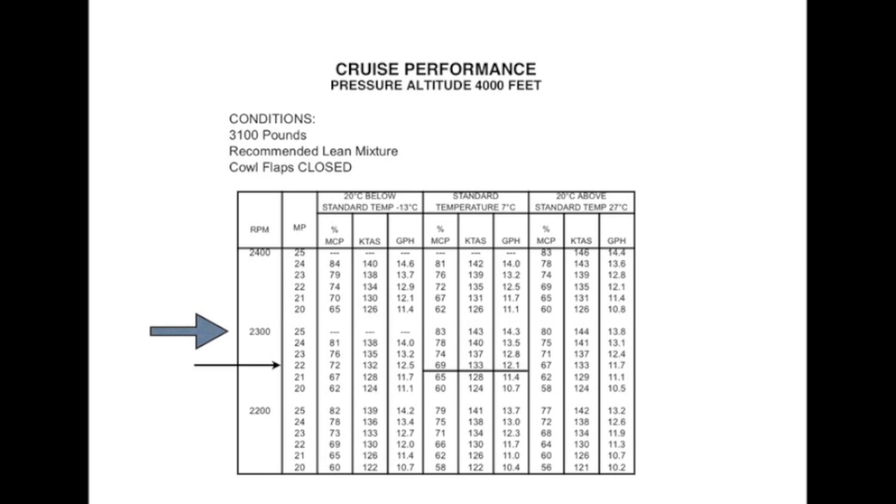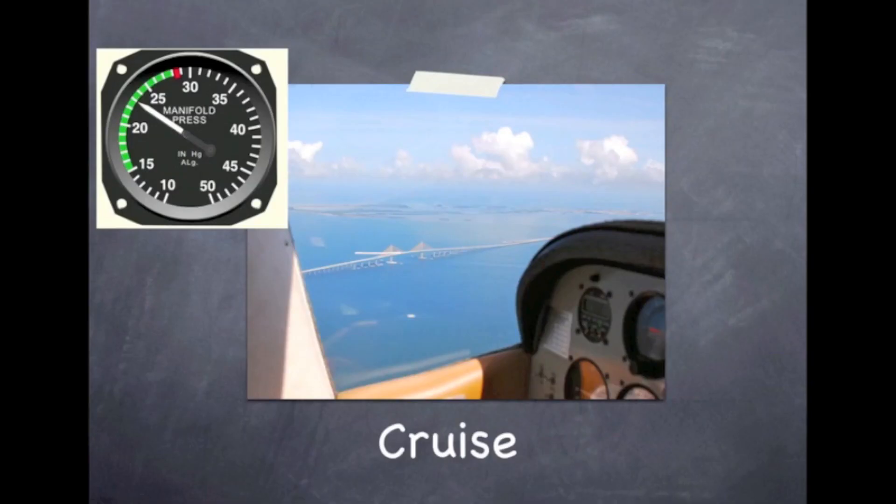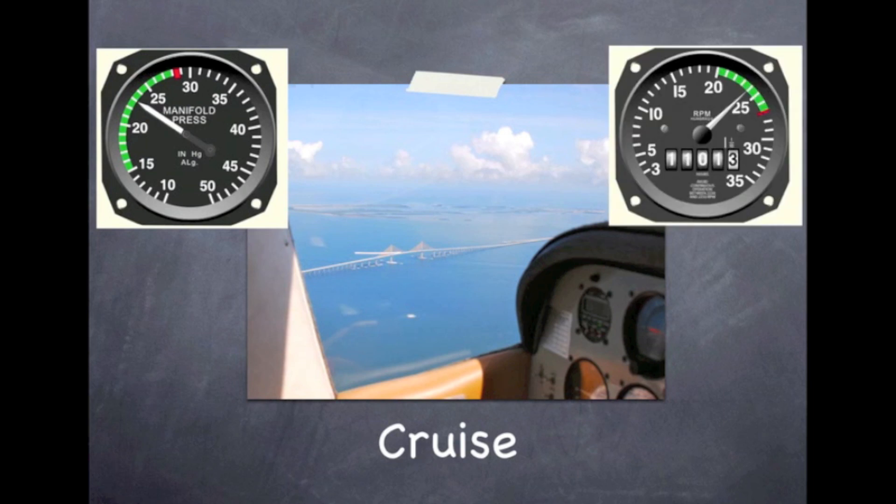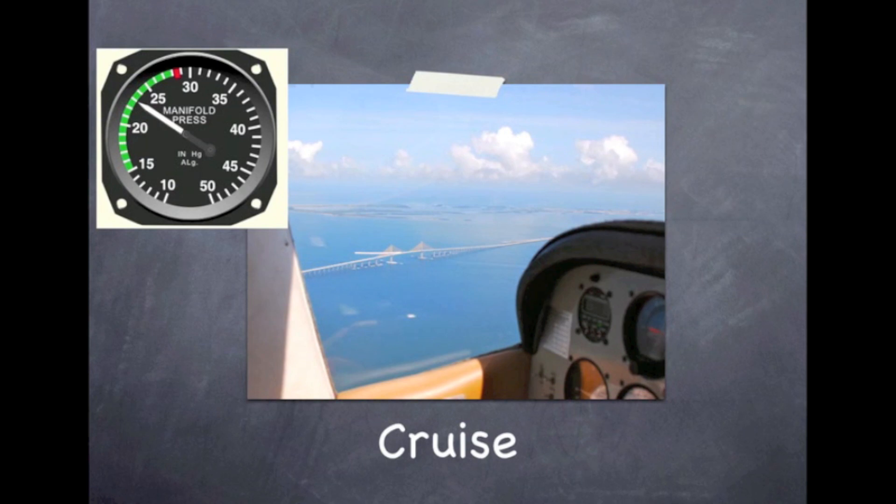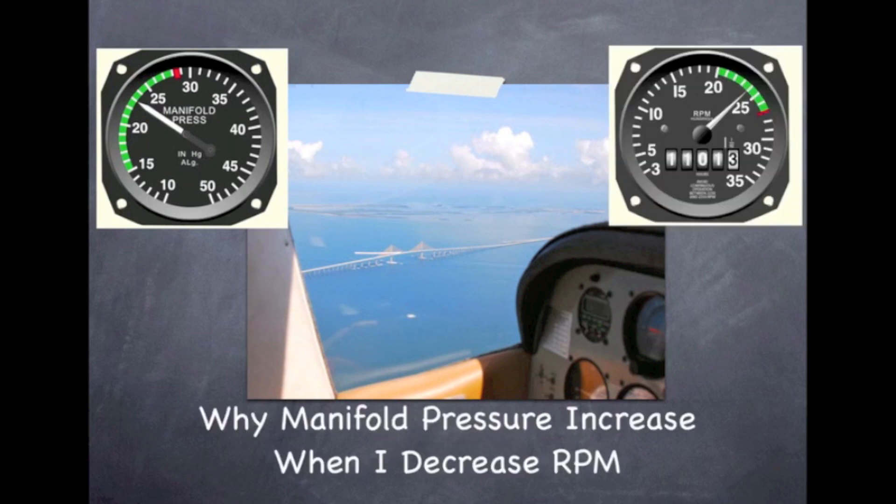To get this cruise speed, power, and fuel flow, what we'll do is we'll first set our manifold pressure to 22 inches. So again, we set our manifold pressure first at 22 inches. Then we set our RPM at our 2300, which is what we wanted to set. But something else interesting happens. We have to go back and reset our manifold pressure because what happens is when you bring the RPM back, the manifold pressure rises a little bit.